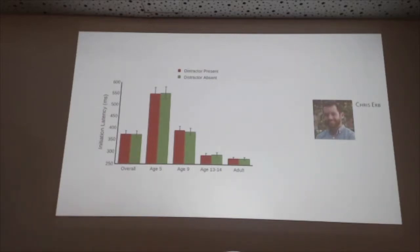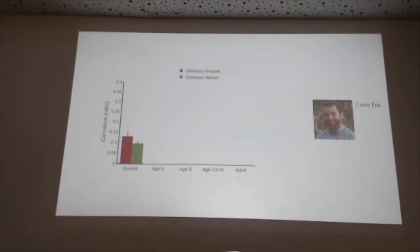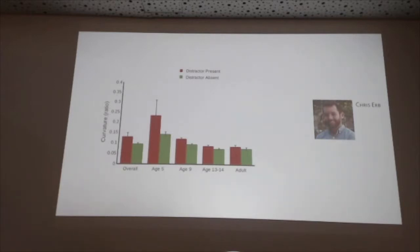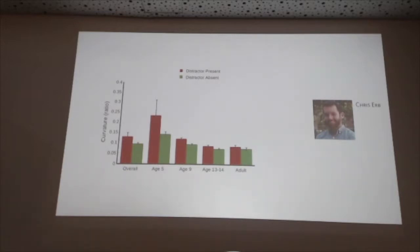But when we look at curvature — the path of the movement — overall there does seem to be an effect of a distractor being present; there is a pull on hand movements. If you look at the developmental trajectory, you see a much bigger effect in younger children, an effect that fades as you get older. The error bars for five-year-olds are particularly large because there are trials where five-year-olds reach way off before ending at the target.